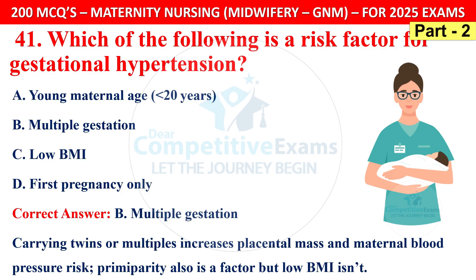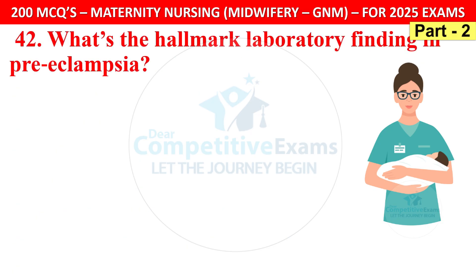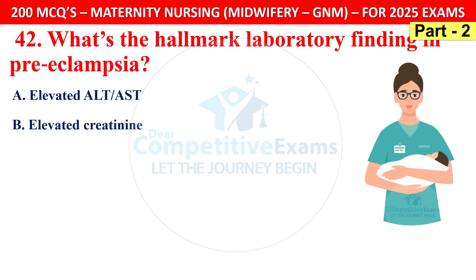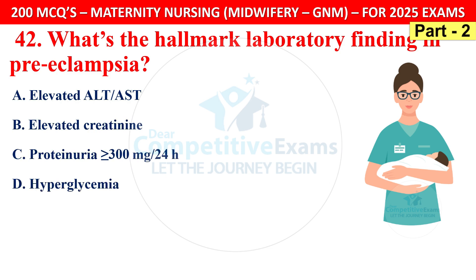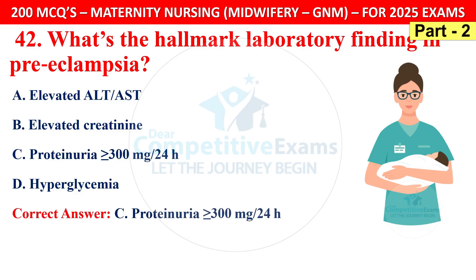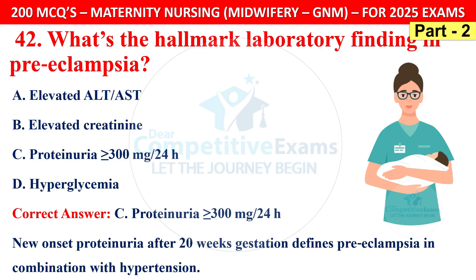Question 42: What is the hallmark laboratory finding in pre-eclampsia? Options are elevated ALT or AST, elevated creatinine, proteinuria, or hyperglycemia. The correct answer is C — proteinuria. New-onset proteinuria after 20 weeks gestation defines pre-eclampsia in combination with hypertension.